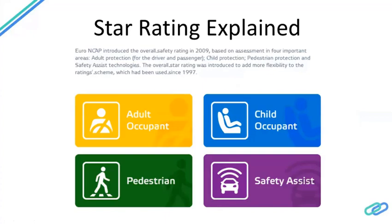Regarding how star rating works: as an OEM you can either offer your car to NCAP for testing and star rating publication, or NCAP has the right to buy any car from a random dealer and test it. OEMs generally offer their cars to ensure a good star rating. The four aspects NCAP evaluates are: adult occupant protection, child occupant protection, pedestrian protection, and safety assist features such as automatic emergency braking.